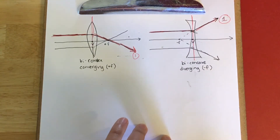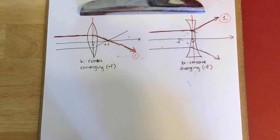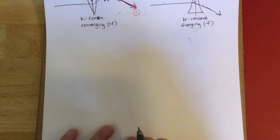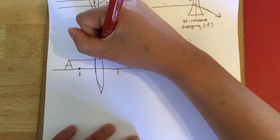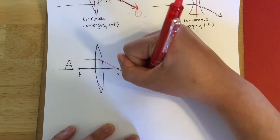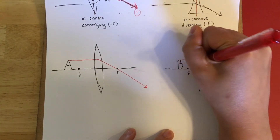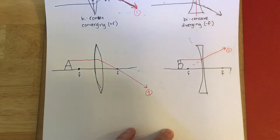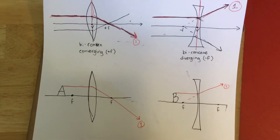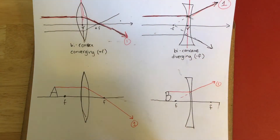Let's say I have an actual ray diagram scenario to draw out. Ray number one would leave the top of the object, go parallel in, hit the center of the lens, and converge towards the focal point for a converging lens — or diverge away for a diverging lens. Please note that ray one comes from the fact that convex is converging and concave is diverging.